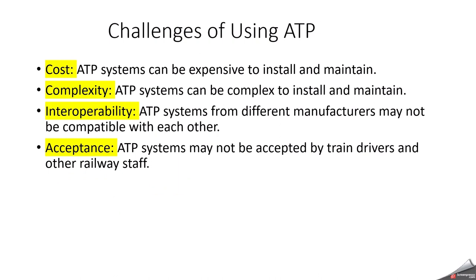The challenges of implementing ATP include: cost — the systems can be expensive to install and maintain; complexity — they can be complex to install and maintain; interoperability — ATP systems from different manufacturers may not be compatible with each other; and acceptance — ATP systems may not be readily accepted by train drivers and other railway staff. Despite these challenges, Kawach and ATP systems must be deployed in all trains to improve safety and reduce human error.